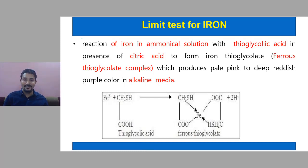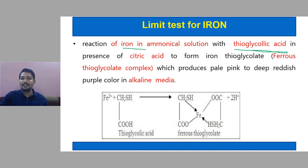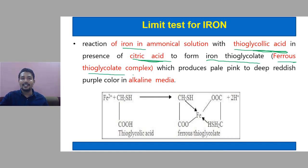Limit test for iron, Fe. The limit test for iron is performed on an ammoniacal solution of iron with thioglycolic acid in the presence of citric acid. This will form iron thioglycolate, or ferrous thioglycolate complex.